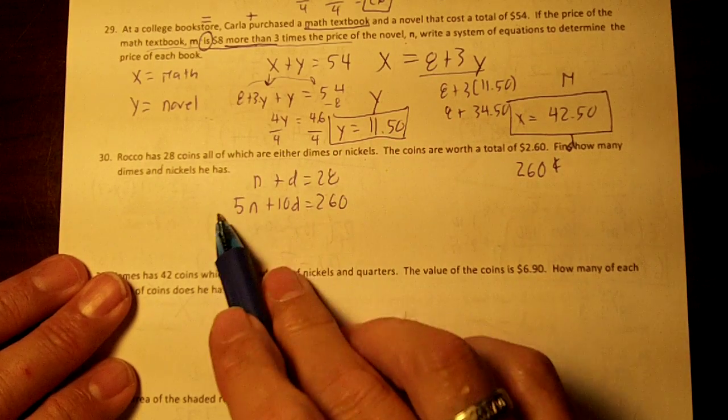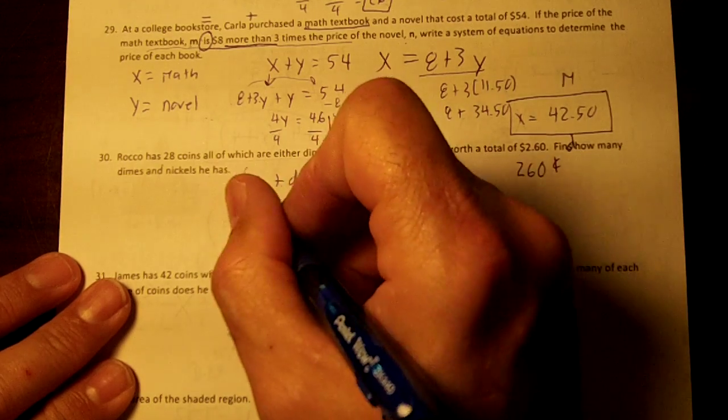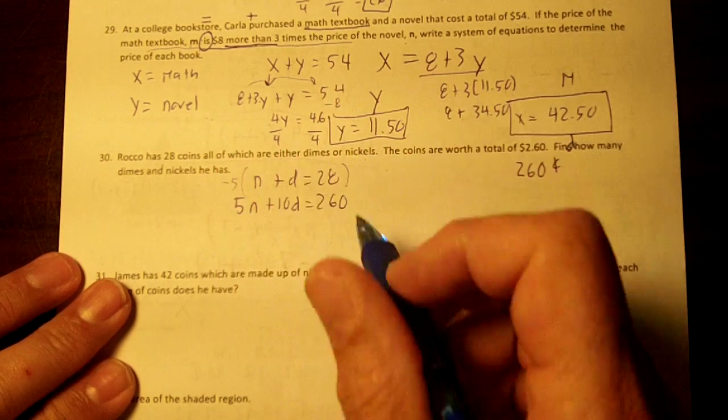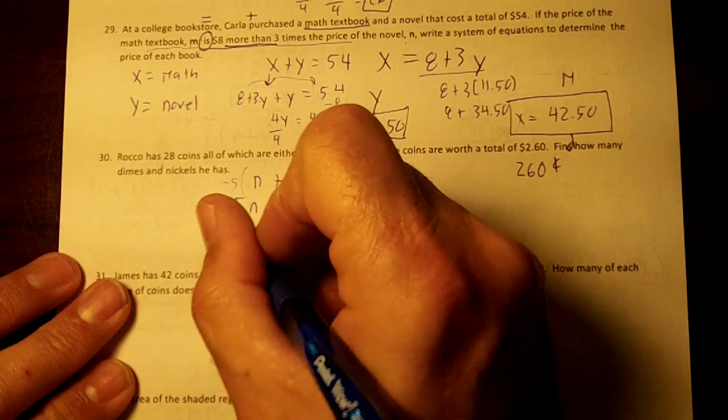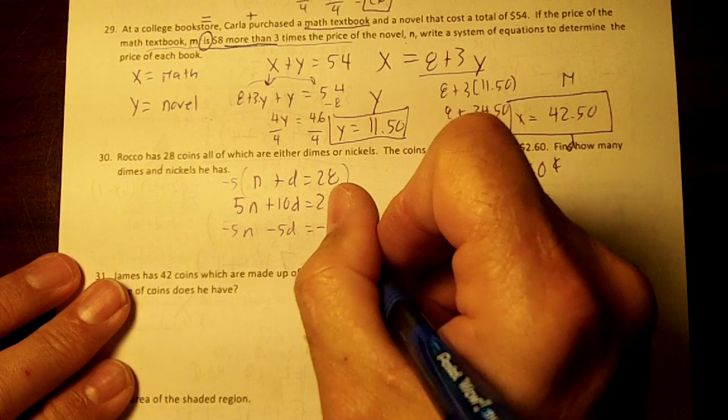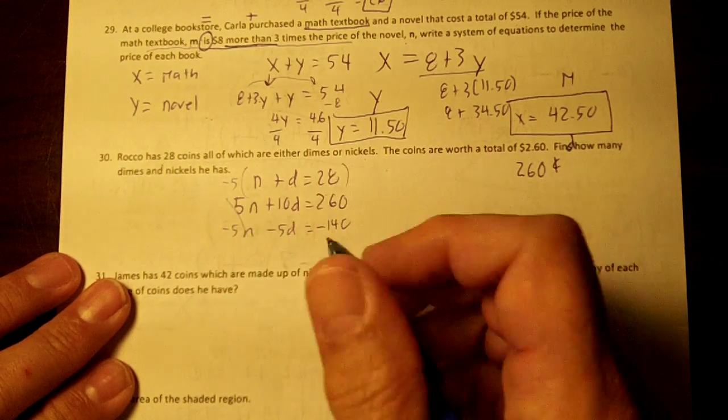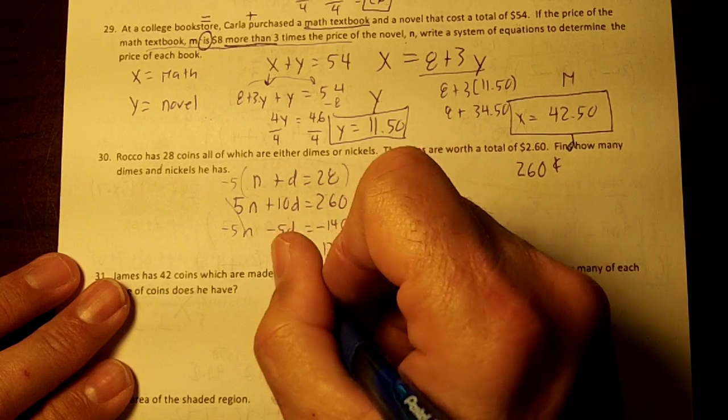Notice I don't have any decimals if I use pennies. Now then, both these equations are in standard form. I'm going to eliminate the N, so I'm going to multiply this equation by negative 5. I'll get negative 5N minus 5D equals negative 140. The N's cancel out. 5D equals 120 divided by 5.